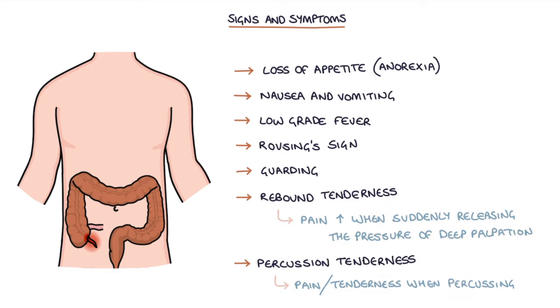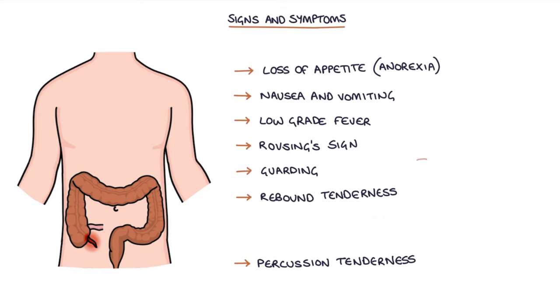Rebound tenderness and percussion tenderness suggest peritonitis, which is inflammation of the peritoneal lining, potentially indicating a ruptured appendix.